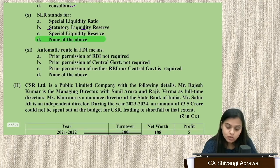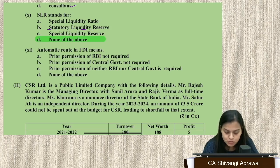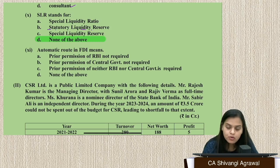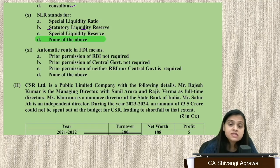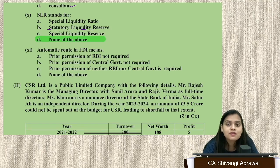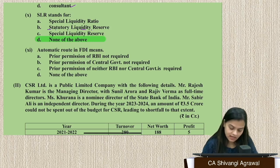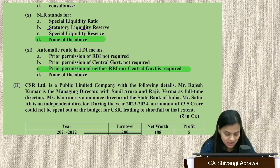Question 11: Automatic route in FDI. Under FDI, there are two types of routes: automatic route and government route. Certain sectors have a sectoral cap. Under the automatic route, a non-resident does not need any prior permission from RBI or the Central Government — they can straight away make an investment in India. So the answer is: prior permission of neither RBI nor Central Government is required.